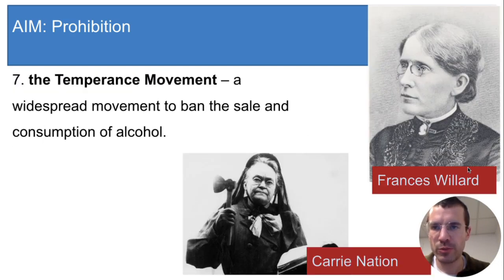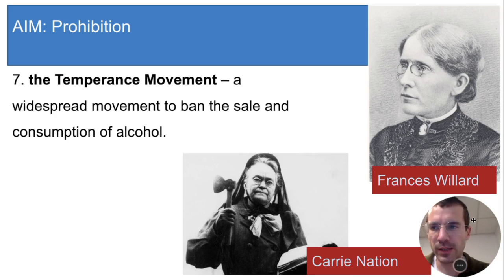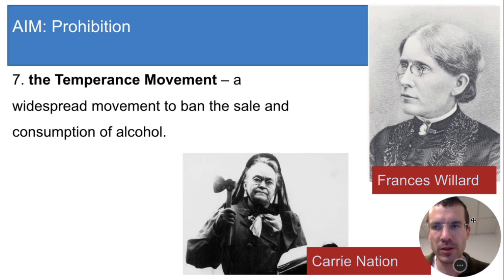Here's your first term: the temperance movement. This was a widespread effort to ban the sale and consumption of alcohol that began in the middle of the 19th century during a period of reform called the Second Great Awakening. Like the women's rights movement, the leaders of the temperance movement were mostly middle-class white women. This woman here is Francis Willard, and this is Carrie Nation — two of the most well-known leaders of the movement.